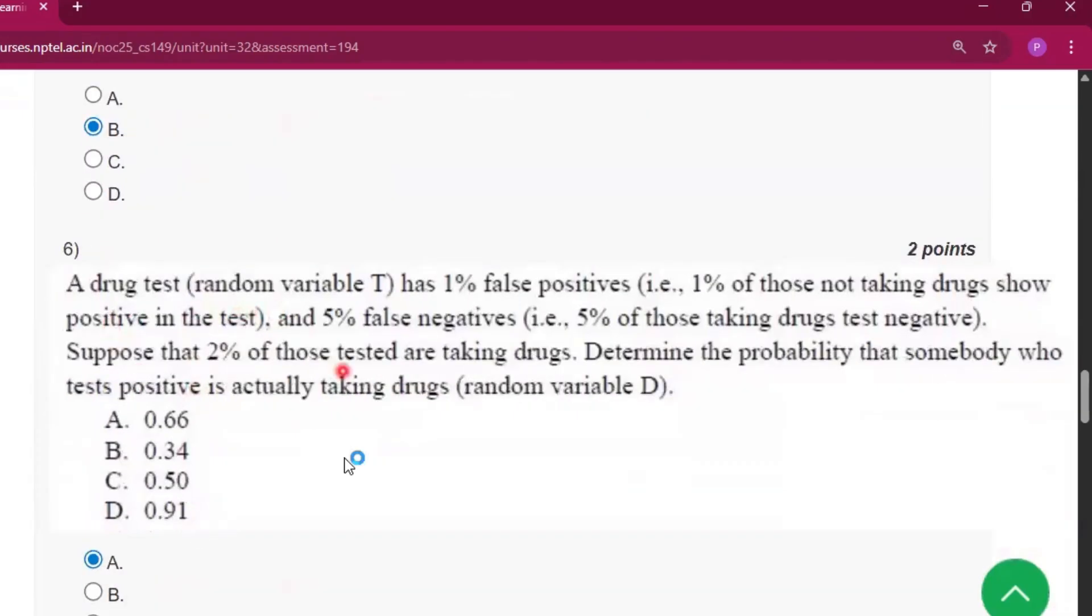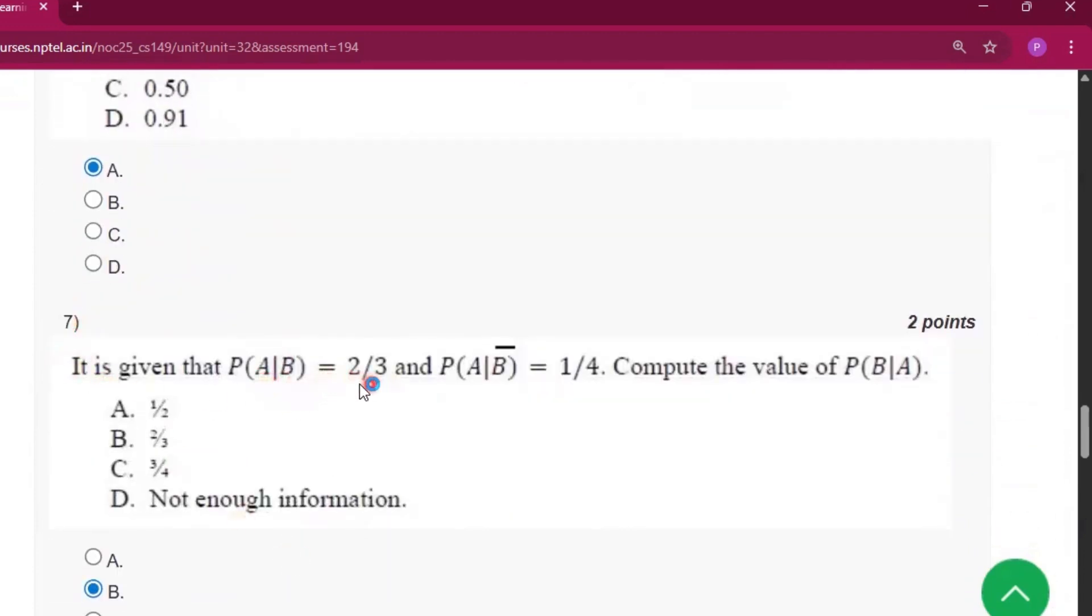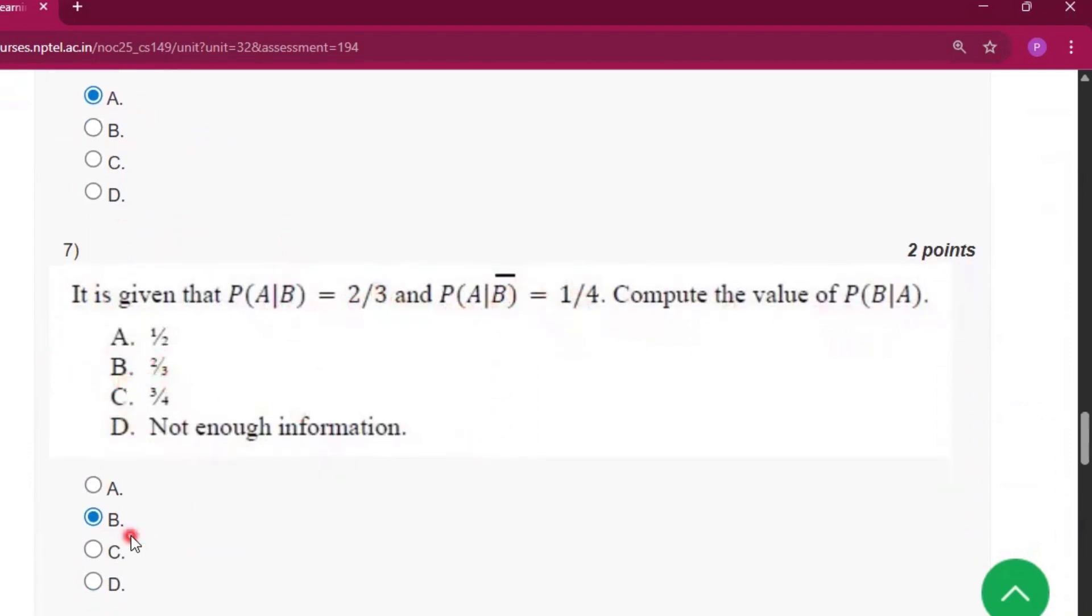Now question number 6, the answer will be option A, that is 0.66. Now question number 7: it is given that P(A|B) equals 2 by 3 and P(A|B') equals 1 by 4. Now compute the value of P(B|A). So the answer will be 2 by 3, that is option B.